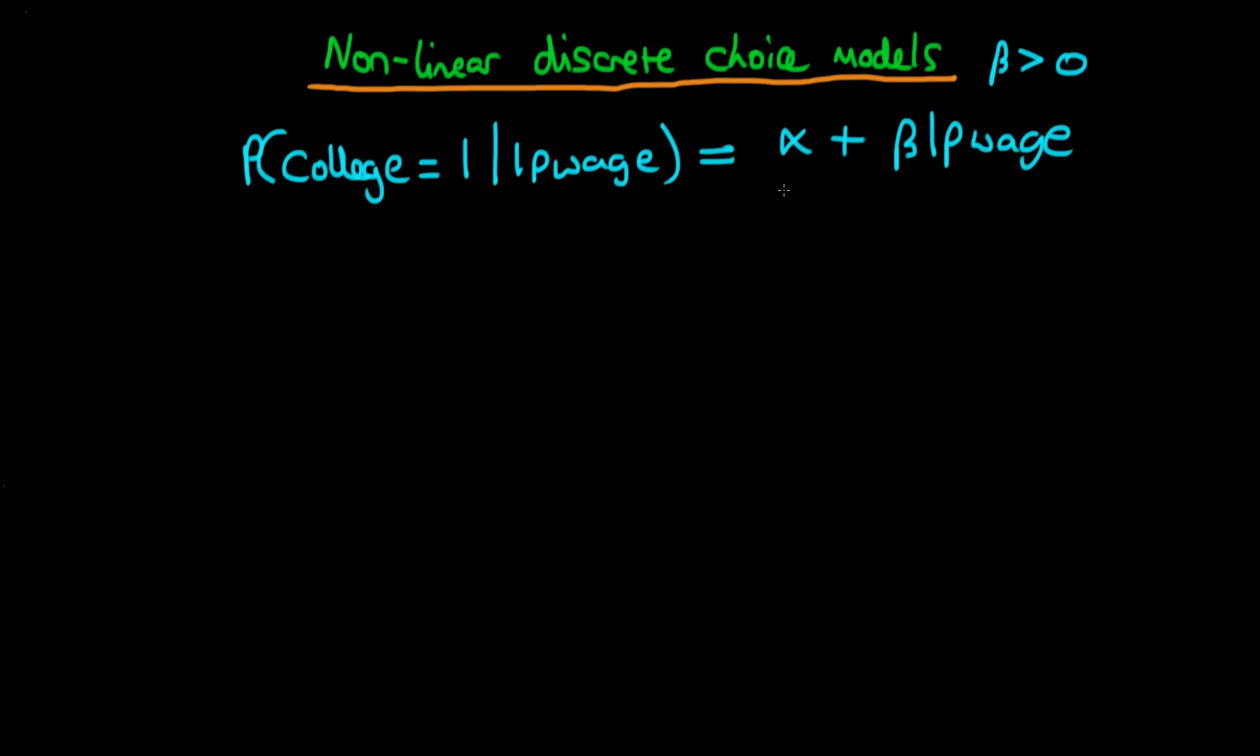We spoke about how this linear combination of our independent variables—in this case just one independent variable—has no particular bound in terms of its value. So alpha plus beta times log wage can go all the way from minus infinity at the bottom up to plus infinity at its upper limit.